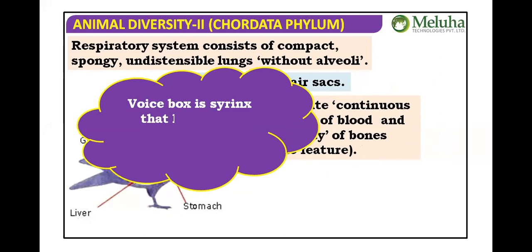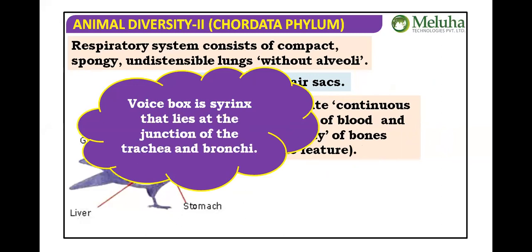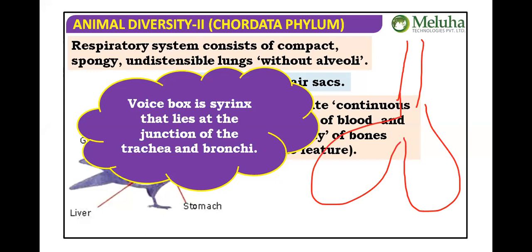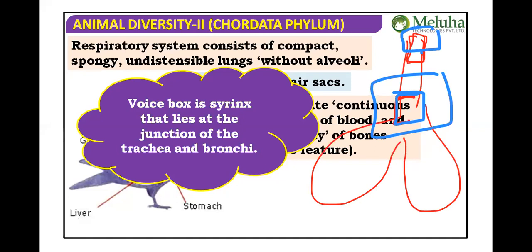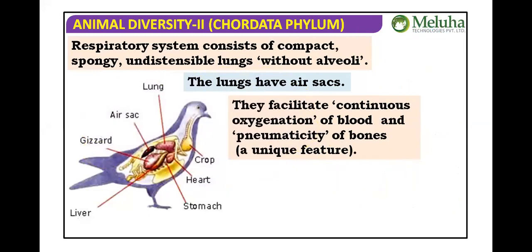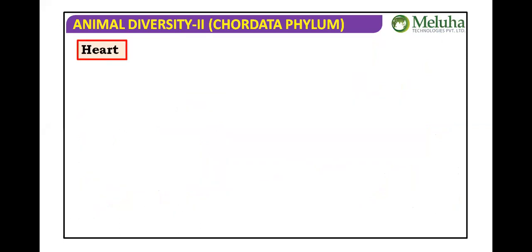The voice box in birds is called the syrinx, located at the junction of the trachea and bronchi. In humans and mammals, the larynx is the voice box located anterior to the trachea; in birds, the syrinx is between the trachea and the lungs.